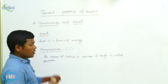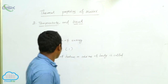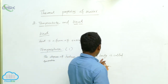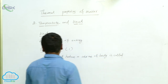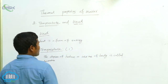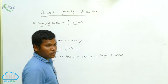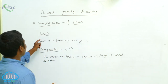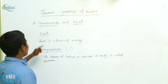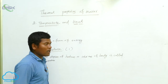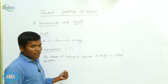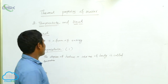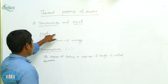The degree of hotness or coldness of a body is called temperature. There are different types of measurement scales — we will discuss those. You should understand the difference between heat and temperature. Heat is a form of energy; that difference we will discuss.